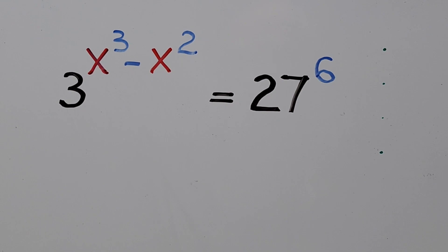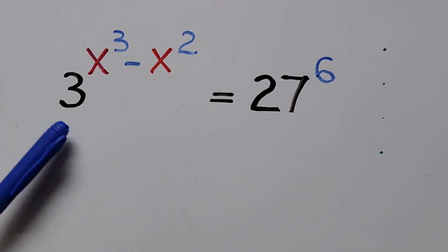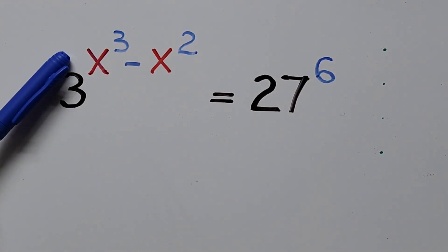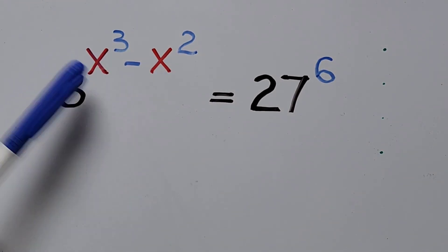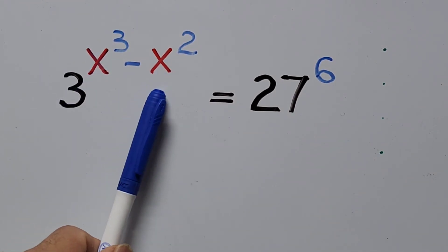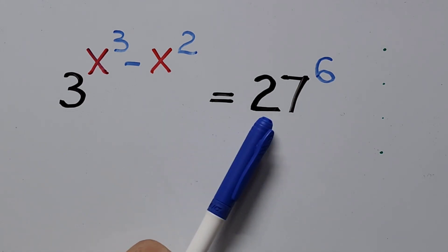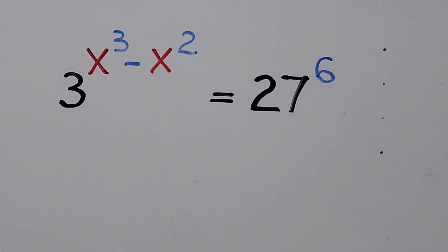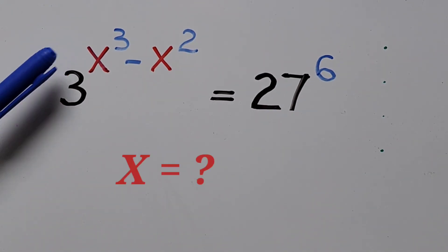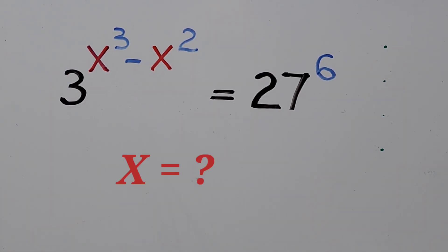Hello everyone. We have here an exponential equation: 3 to the power of x cubed minus x squared equals 27 to the power of 6. We're solving for all the values of x.